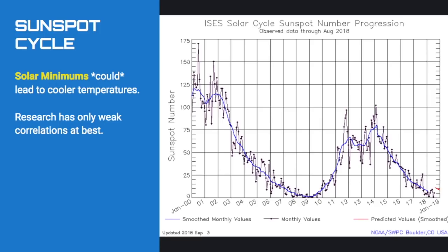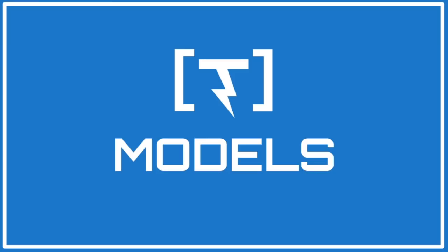The final factor is a wild card — the Sunspot Cycle. There are very weak correlations at best suggesting solar minimums favor colder winters, and there's not a whole lot of research supporting it. But right now we are in our solar minimum, so I threw that in. Overall, I don't think we even need it — there's already a lot of signals pointing to a cold east half of the United States.